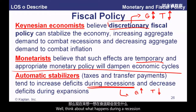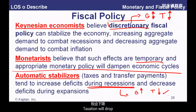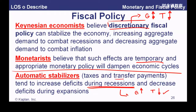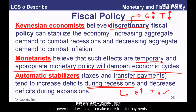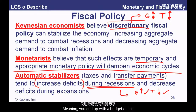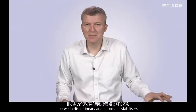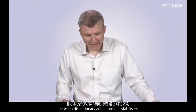Think about what happens during a recession: people aren't making much cash, companies aren't making large profits, so taxation will drop and tax revenues will fall. Plus, during a recession, the government will have to make more transfer payments — more welfare, more unemployment benefit. So government spending will automatically increase, meaning you will end up with a budget deficit — exactly what we say should happen in a recession. Make sure you can distinguish between discretionary and automatic stabilizers.